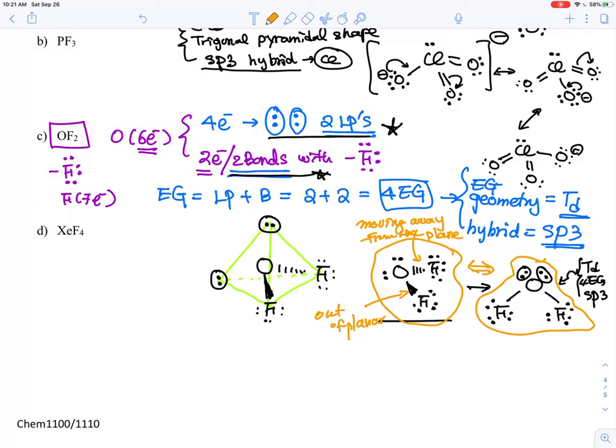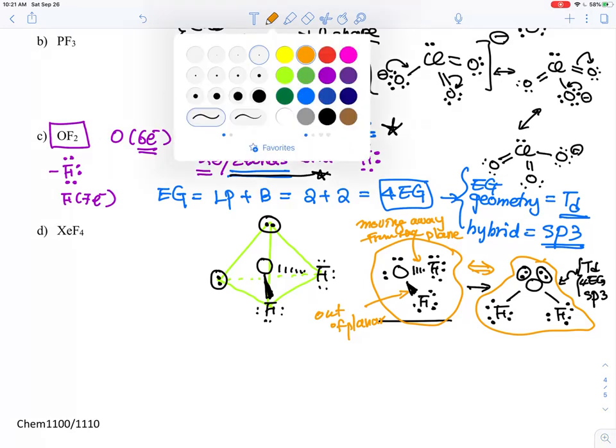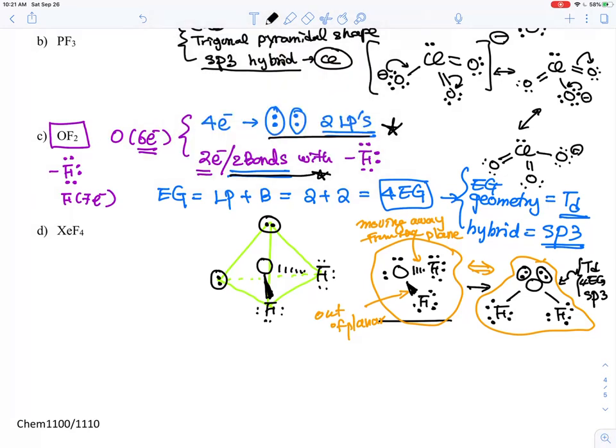That's why they use a broken line to kind of give you, suggesting that it is fading away. So OF2, once again, that's a 4EG tetrahedral geometry. And this is, what kind of shape do we call this? This is essentially we call bent. Sometimes people call it V shape.